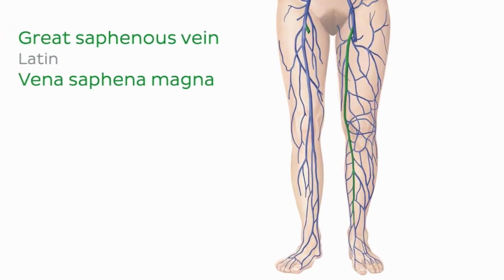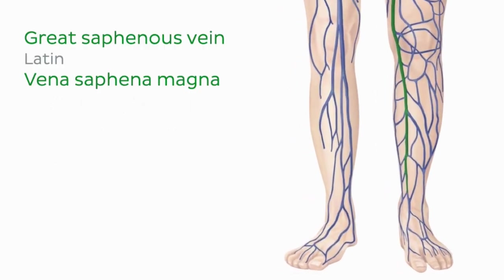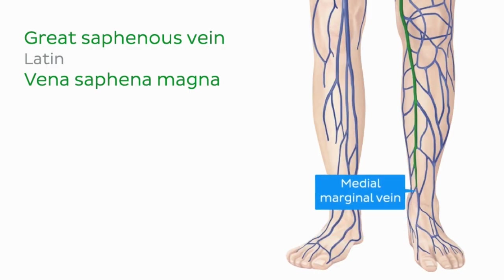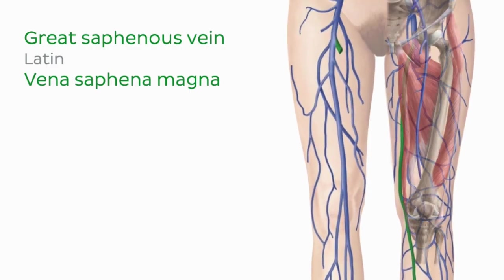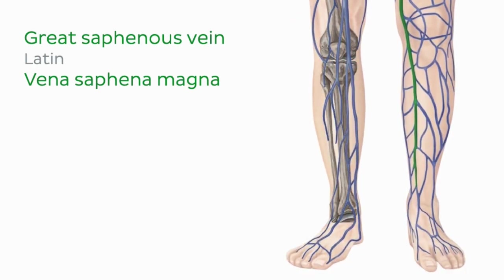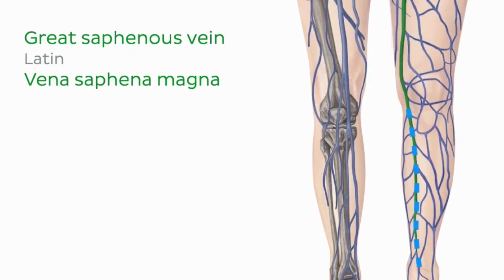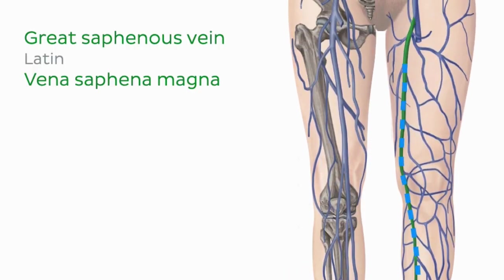The great saphenous vein, sometimes referred to as the long saphenous vein, is the longest vein in the human body. It is a continuation of the medial marginal vein of the foot and ends distal to the inguinal ligament at the femoral vein. The great saphenous vein almost twists around the leg as it ascends superficial to the medial malleolus, crosses the distal third of the tibia anteroposterolaterally, passes behind the medial tibial and femoral condyles, ascends up the medial aspect of the thigh, then passes through the saphenous opening and opens into the femoral vein, joining the veins of the leg into one.